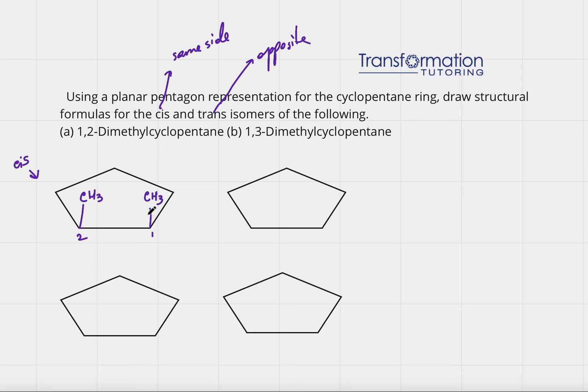What would trans look like? Trans is on opposite sides. So for example, if this methyl group was up, this methyl group would be down. So this would be my trans isomer.